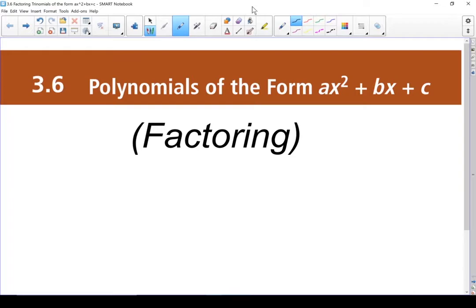3.6, polynomials of the form ax squared plus bx plus c. We are going to be looking at factoring these types of trinomials.